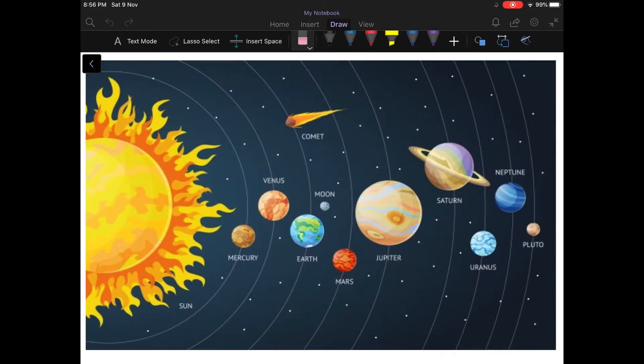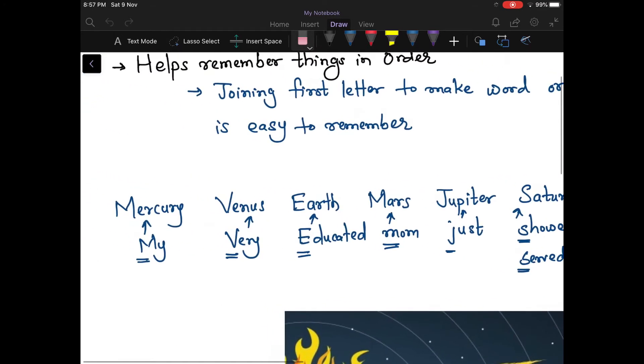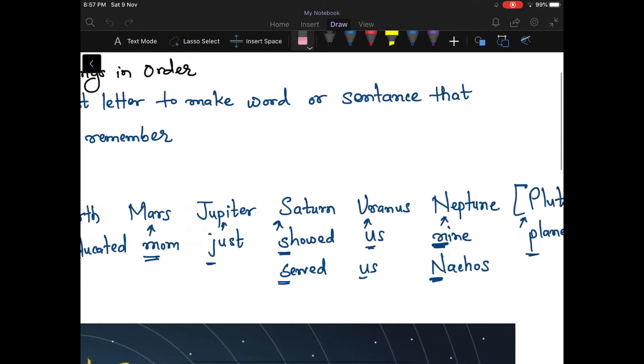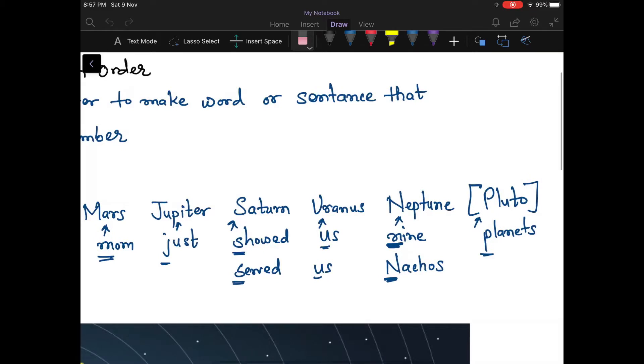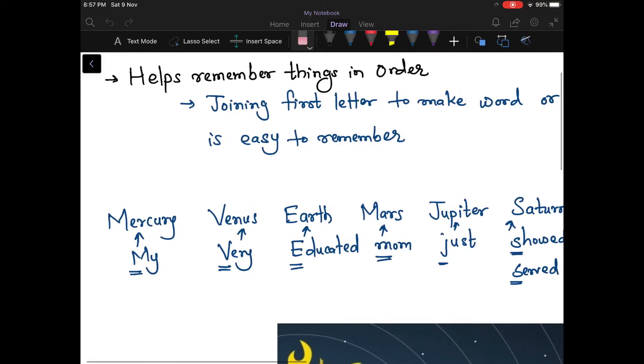Now comes the trick by which we can remember the order of the planets from the sun. I list down the planets: Mercury, Venus, Earth, Mars, Jupiter, Saturn, Uranus, Neptune, and Pluto. Pluto has been recently removed. Now the trick is you have to remember this line: 'My very educated mom just served us nachos' to remember the list of first eight planets.